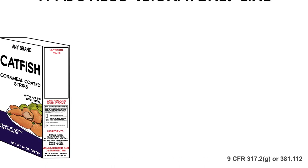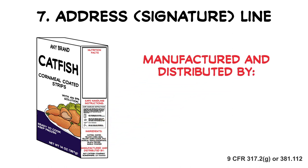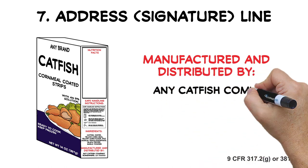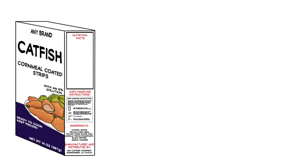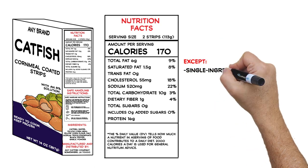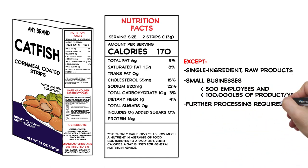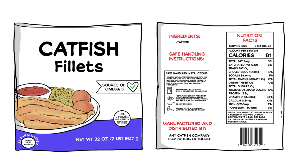Catfish labels must include the name or trade name and place of business of the manufacturer, packer, or distributor for whom the product is prepared. If the distributor is listed, it must be preceded by a phrase such as 'Prepared For' or 'Distributed By.' The address must include street name and number unless the firm is listed in a local or internet telephone directory; city, state, and zip code are always required. Nutrition labeling is necessary for all catfish products except single-ingredient raw products and other exempt products such as those produced by small businesses, products intended for further processing, and products prepared and sold at retail. Be aware that if you make any nutrient content claims on the label or marketing materials, then you must have a nutrition facts label and be absolutely sure your product meets the legal definition of those terms.